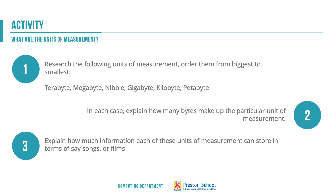At this point, pause the video and jump online. I'd like you to find the terms terabyte, megabyte, nibble, gigabyte, kilobyte, and petabyte. In each case, explain how many bytes go into each of them while putting them in order from biggest to smallest. Then think about how much that actually is — because it's very easy to say a million bytes, but how many pictures or song files is that? You're going to want to spend about 15 to 20 minutes on online research into those six different units of measurement.